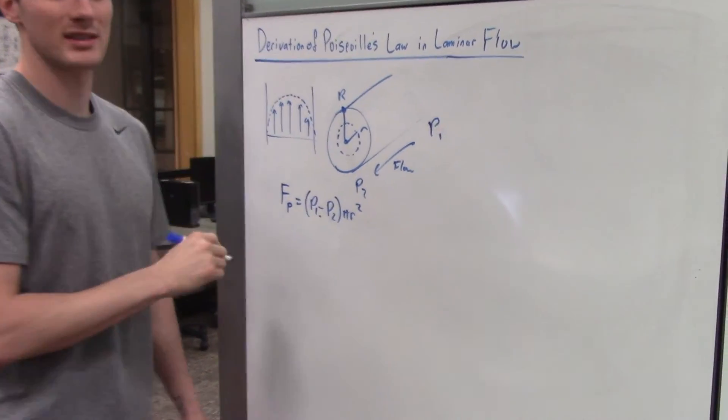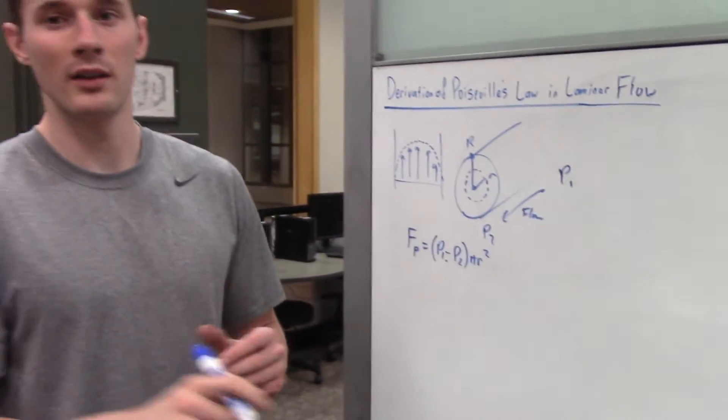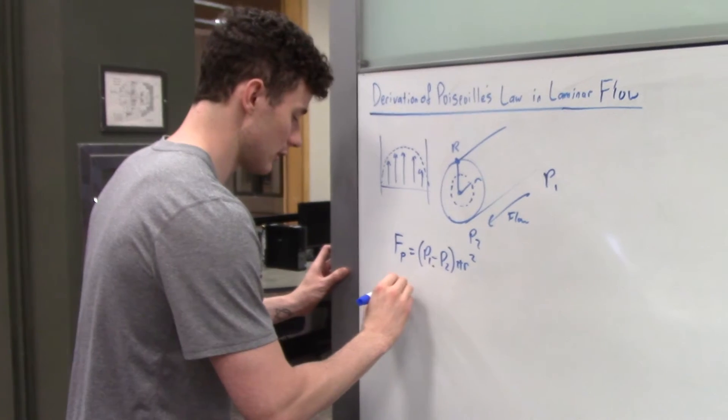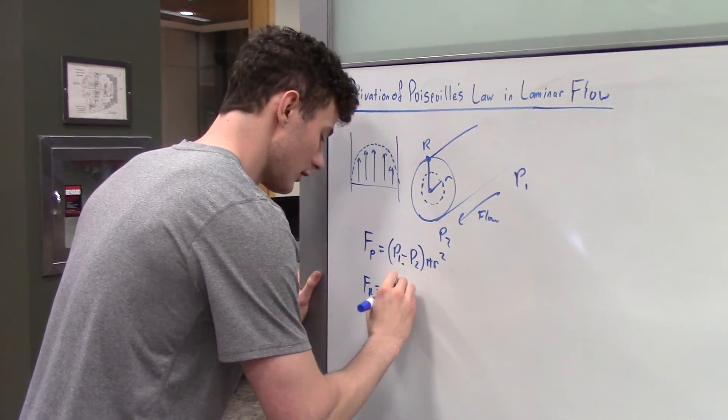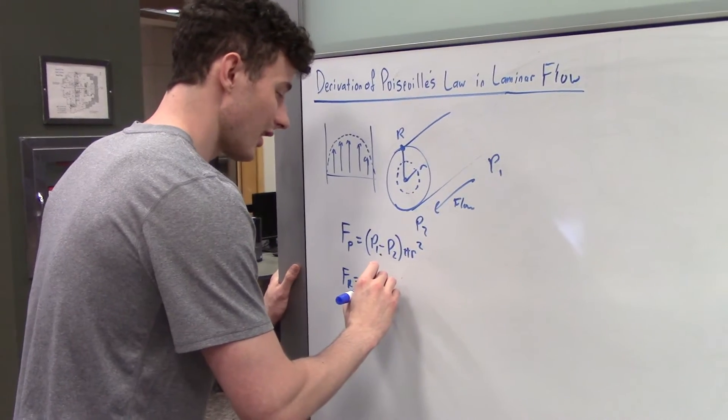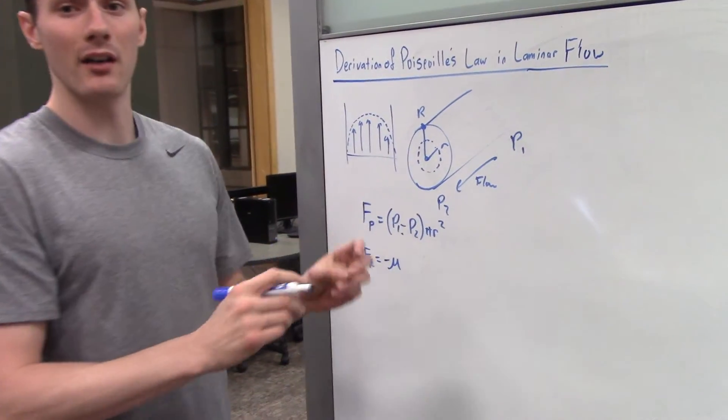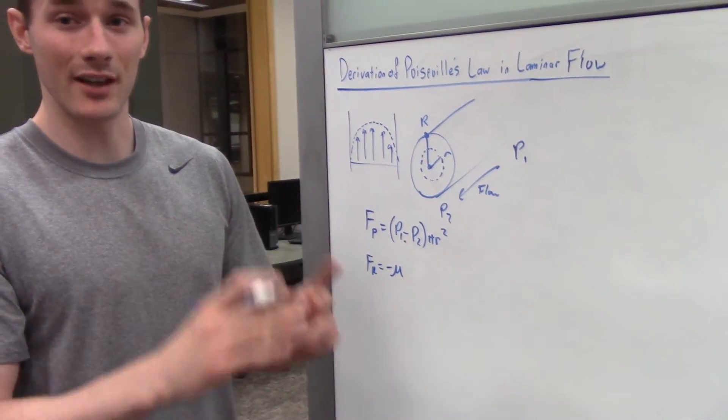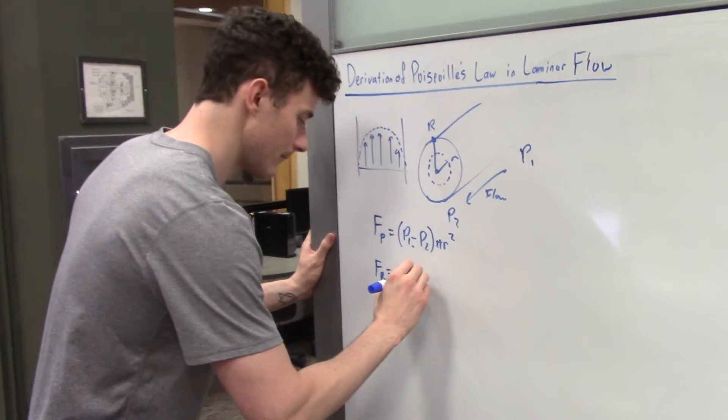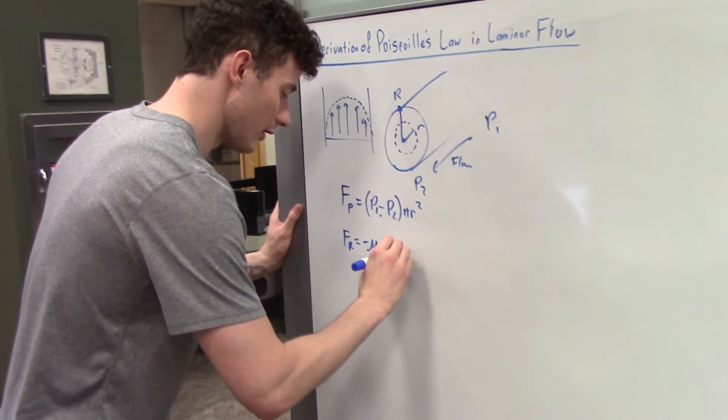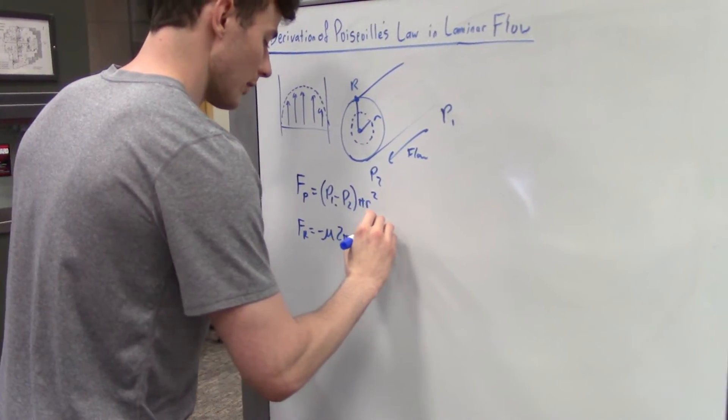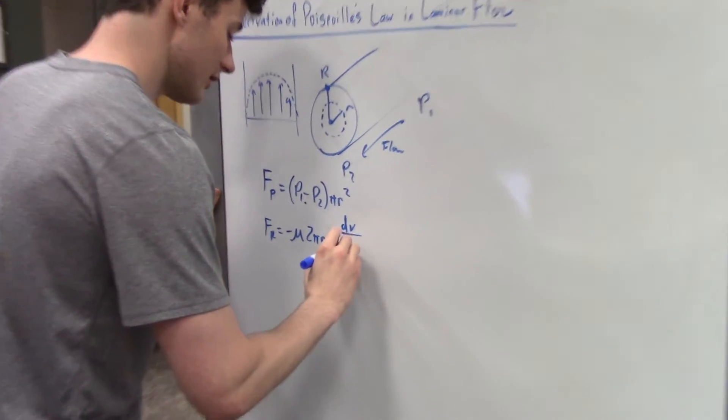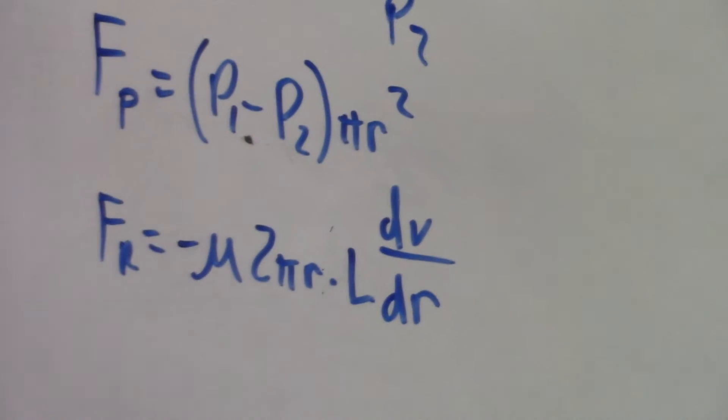And then the force that's pushing against the flow is called FR. That is going to be equal to the negative of the viscosity times the area or circumference times the length of the pipe. So that's going to be 2 pi R times the length, and then that's multiplied by the differential of velocity and then the differential of little r.